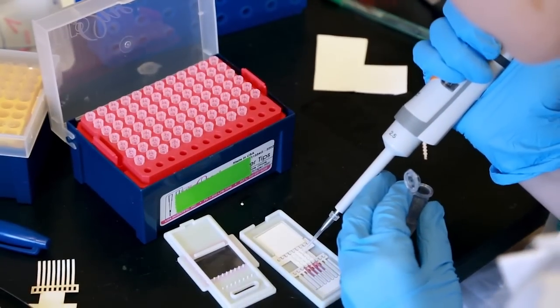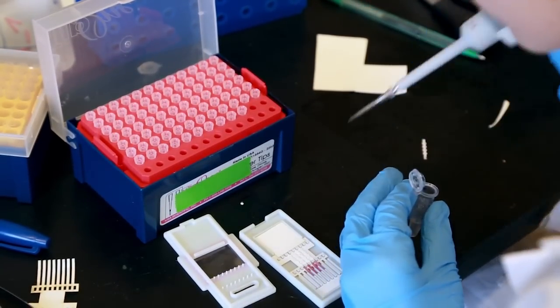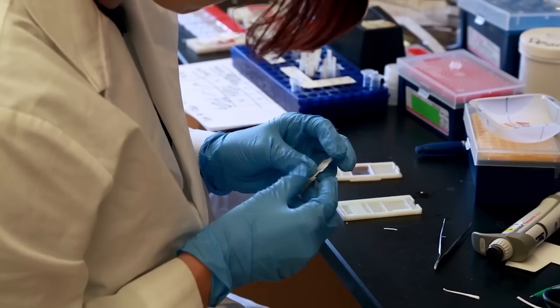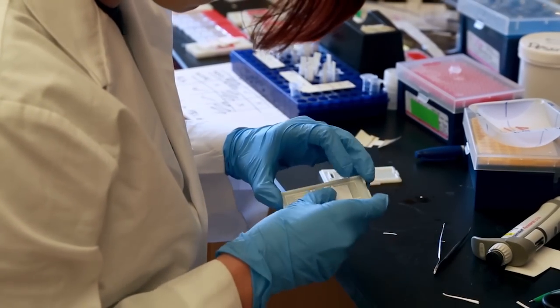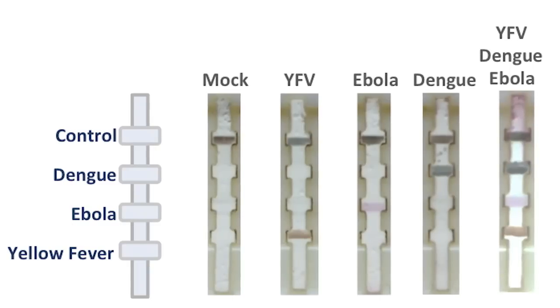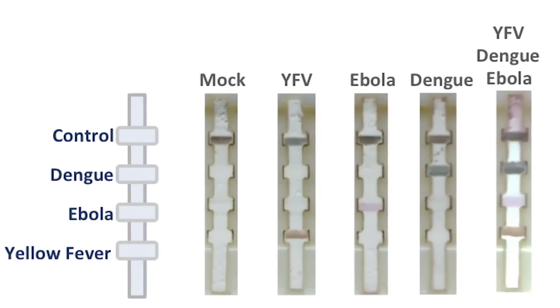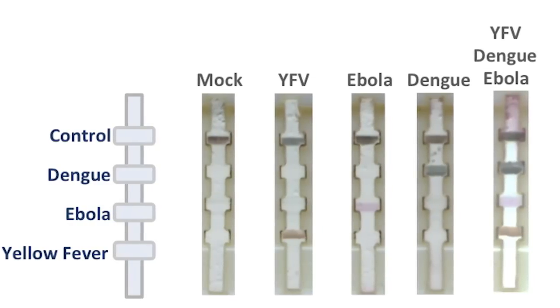The test uses nanoparticles made of silver. The size of these nanoparticles determines their color. So the team used three different sizes of these chemical ingredients and combined them with antibodies for the three diseases. If the antibodies capture virus proteins from a patient's blood sample, the result is triggered on the strip.